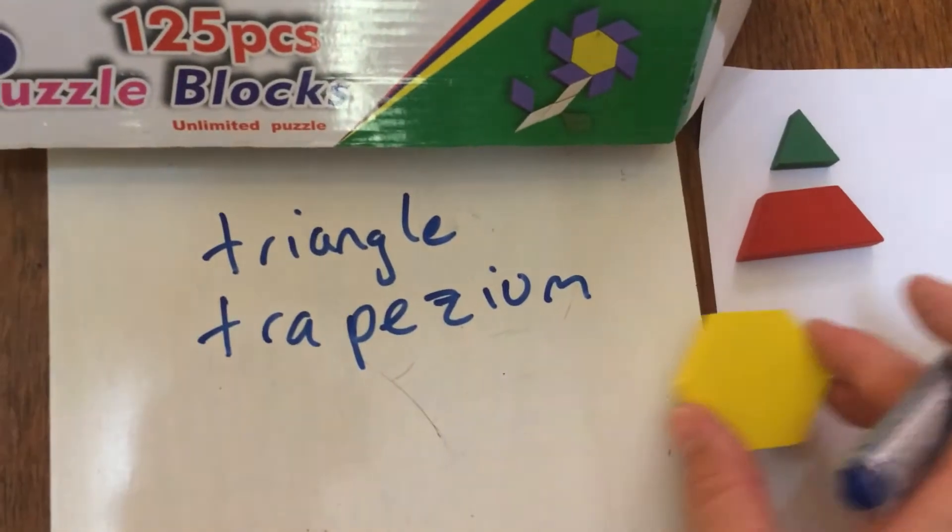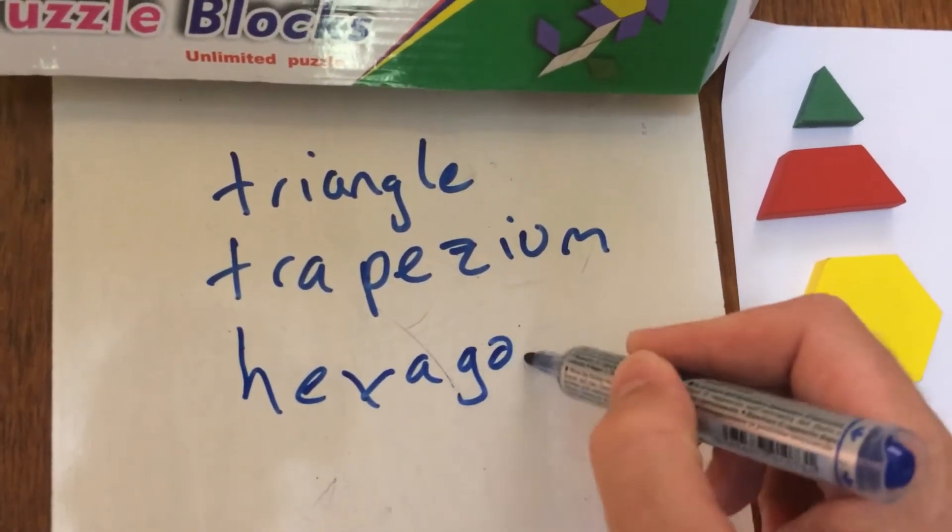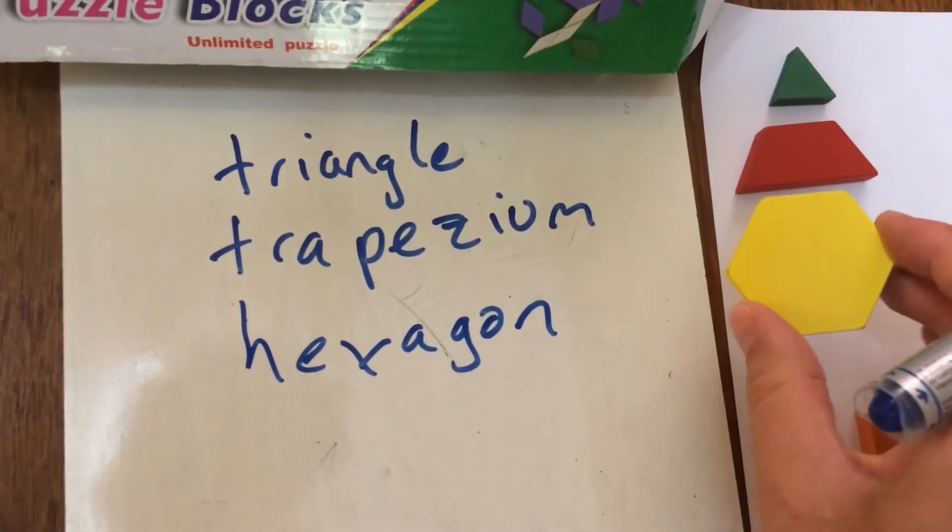Then we've got a hexagon—a regular hexagon because all the sides and angles are the same.